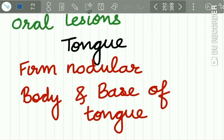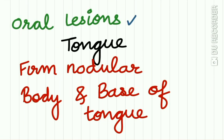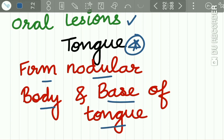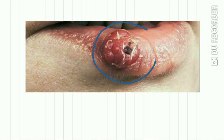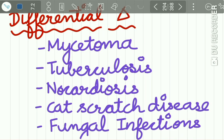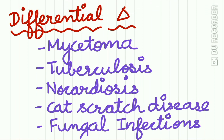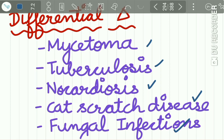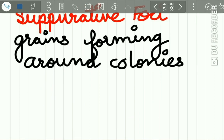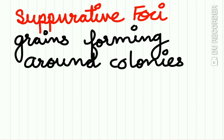The oral lesions are found on the tongue, and these lesions may be firm and nodular, mostly found on the body and base of the tongue. You can see a lesion of botryomycosis present on the lips. The differential diagnosis of botryomycosis may include mycetoma, tuberculosis, nocardiosis, cat scratch disease, and fungal infections.